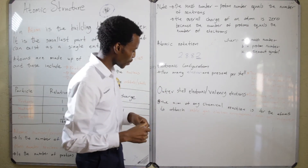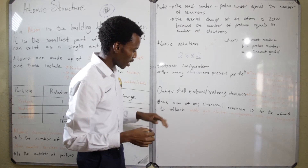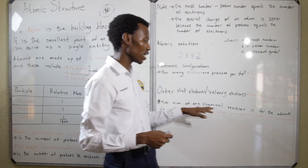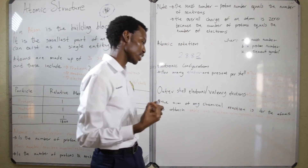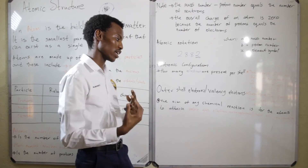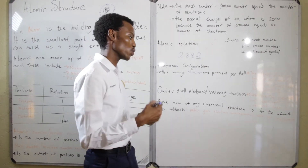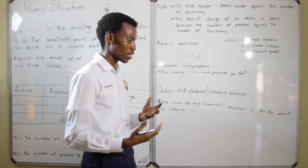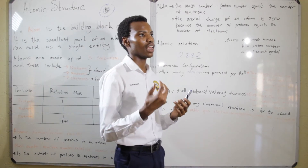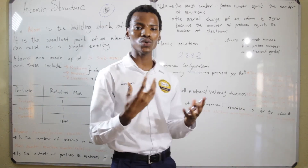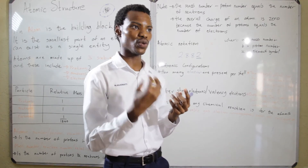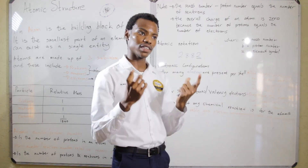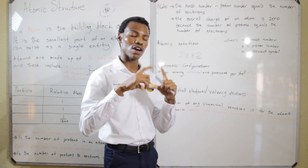The last thing we are going to talk about is that we should note that the aim of any chemical reaction is for the atoms to attain what you call noble gas electronic configuration or noble gas arrangement. This basically means that atoms will gain or lose electrons just so that they can have a total of eight electrons in their valence shell or in the outermost shell.